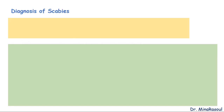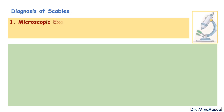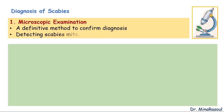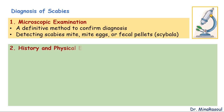Regarding diagnosis of scabies, microscopic examination is a definitive method to confirm diagnosis by detecting scabies mites, mite eggs, or fecal pellets known as scybala. This method is not always feasible, so a presumptive diagnosis is sometimes made based upon a consistent history and physical examination.